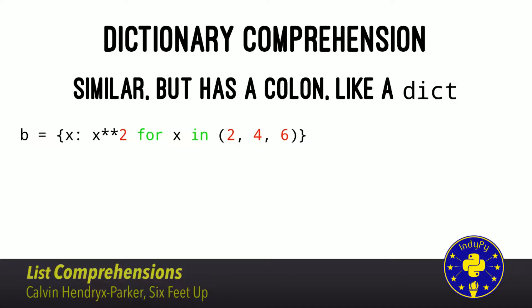With dictionary comprehensions, it's similar but this time we have the colon. Curly braces just like a set comprehension, but now we can do key and value. If we wanted the key to be the number from our tuple and the value to be the number squared, we can do 'x: x squared for x in 2, 4, 6' and in the end we get a dictionary. So the only difference is the colon with keys and values — it gives us back a plain old Python dictionary, but we've eliminated the for loop. You can use conditionals, you can do nesting — all the things you can do with list comprehensions, you can do with set and dictionary comprehensions.